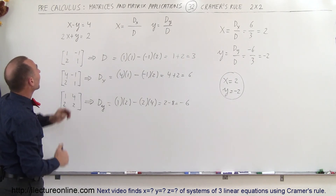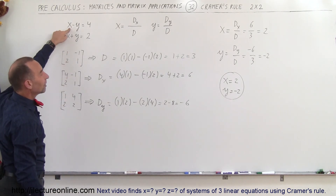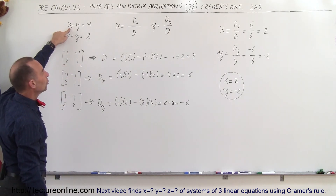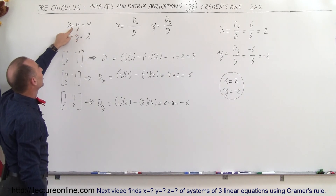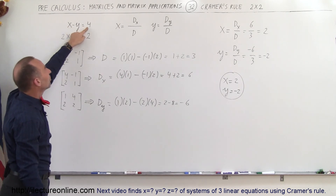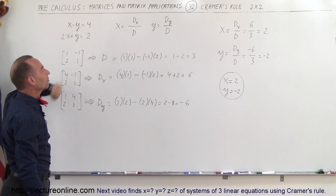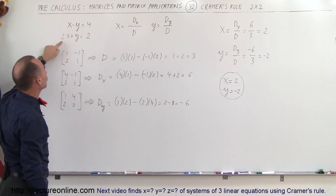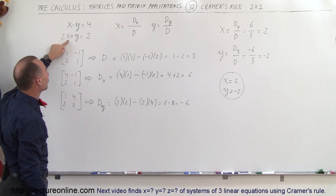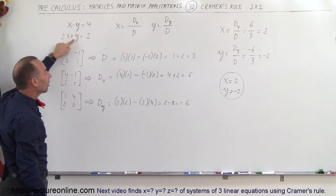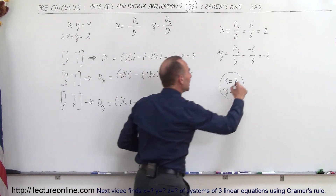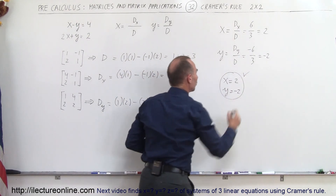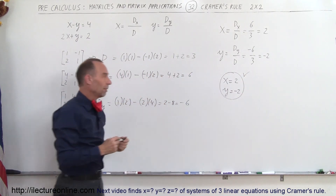A quick check: if x equals 2 and y equals -2, then 2 minus (-2) is indeed 4, so that checks out. And 2 times 2 is 4, plus (-2) is 2, which also checks out. These are indeed the solutions to our problem.